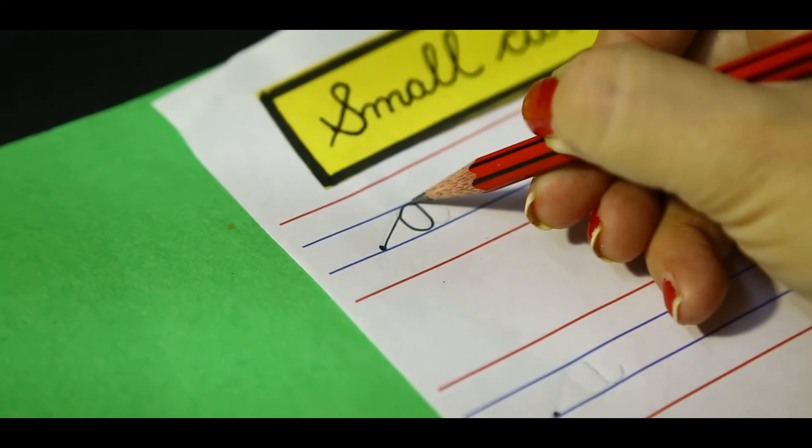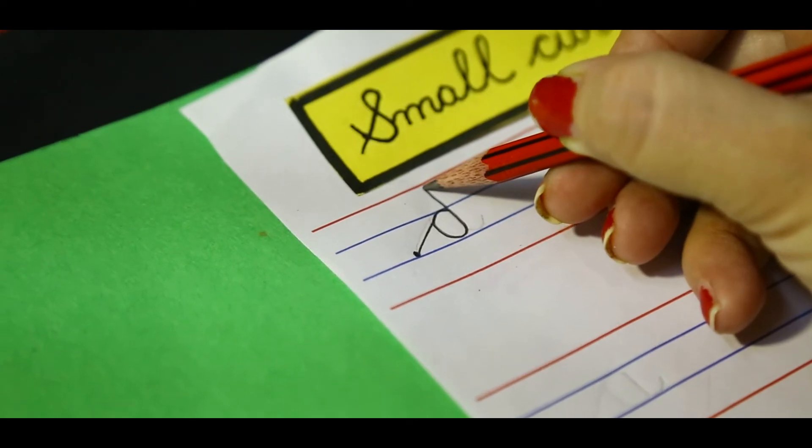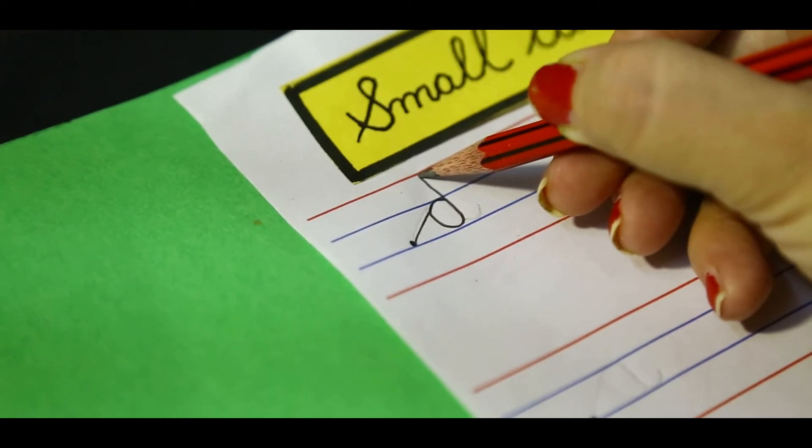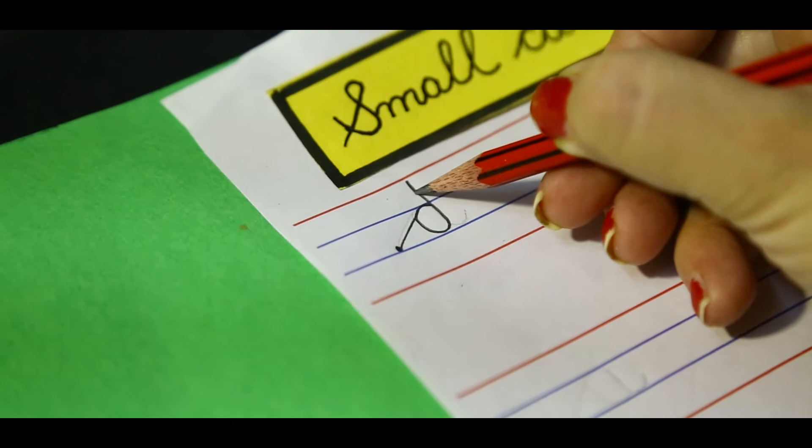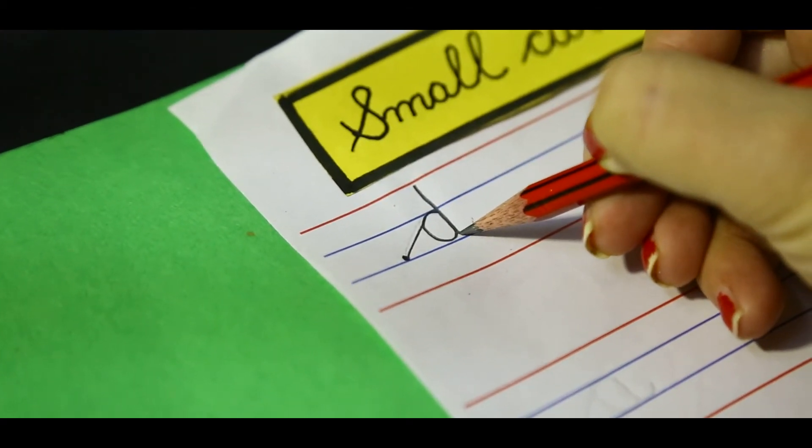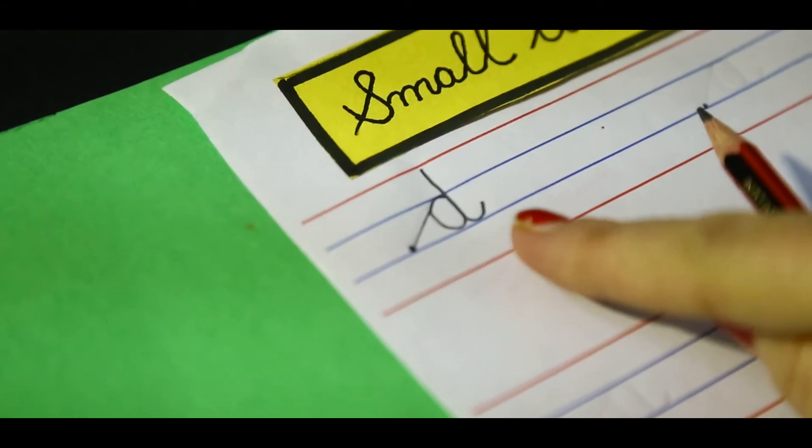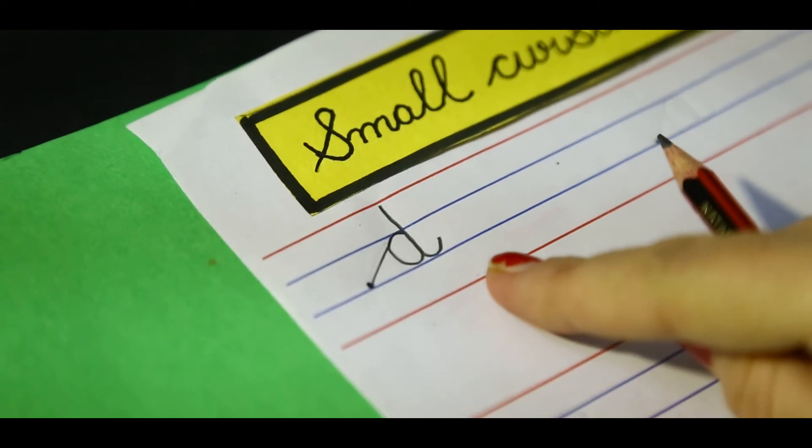Go up, up, up towards the top red line. Go back to the same blue line and a little T. This is small cursive D.